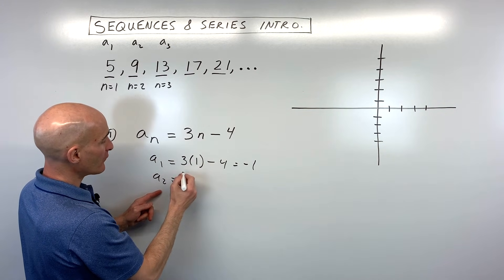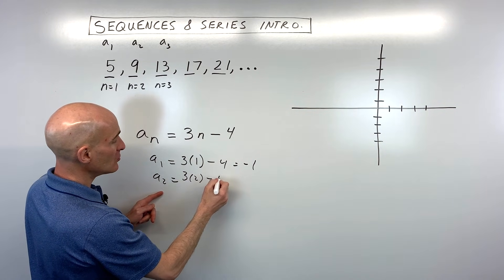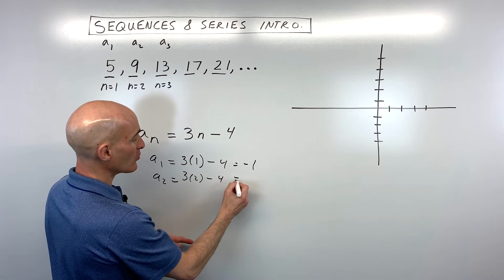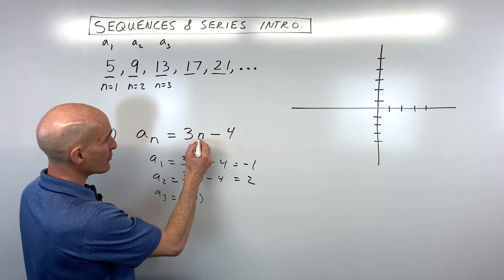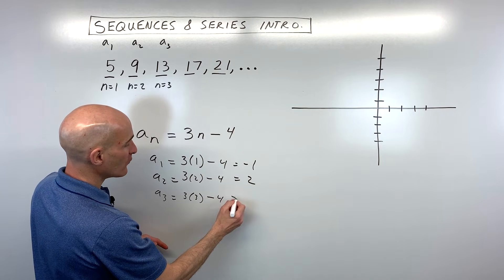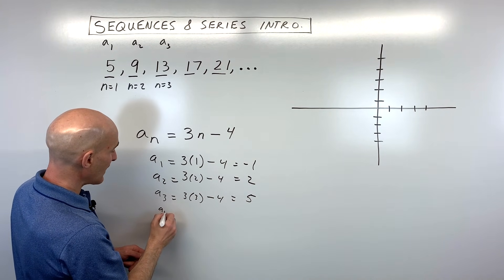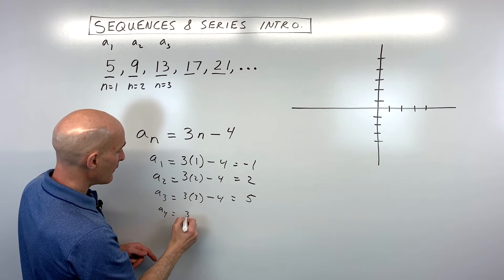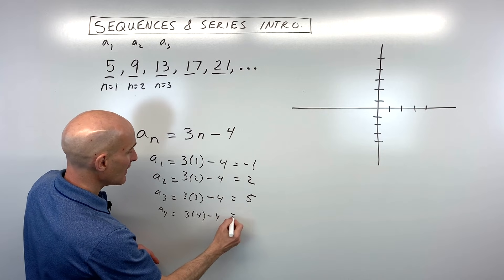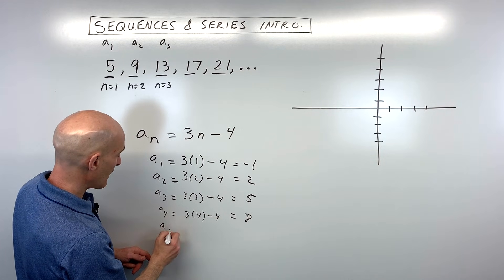a sub 2, we're going to put 2 in for n. That's going to be 3 times 2, minus 4, that's 6 minus 4, which equals 2. a sub 3, we're just putting 3 in for n. That's going to be 9 minus 4, which is equal to 5. a sub 4, we're putting 4 in for n. 3 times 4 is 12, minus 4 is 8. And then if we do a sub 5, 3 times 5 minus 4 is 15 minus 4, which equals 11.